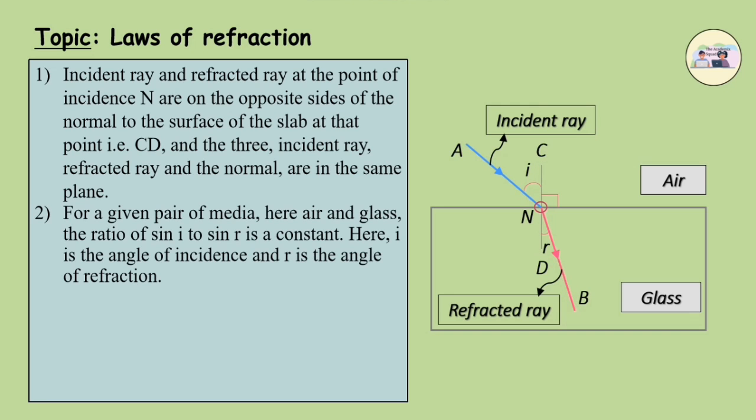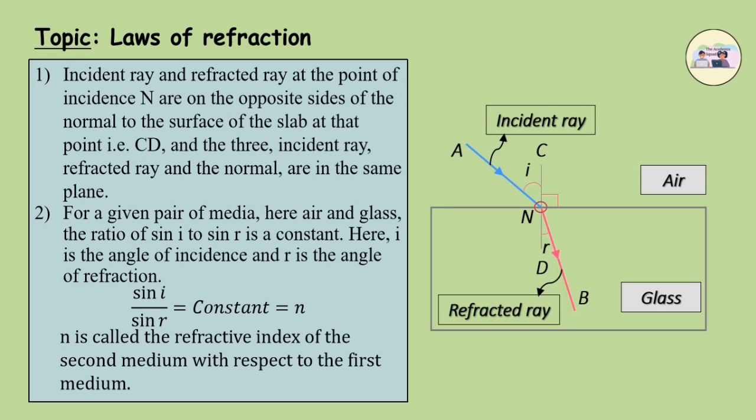Second, for a given pair of media, here air and glass, the ratio of sin I to sin R is a constant. Here, I is the angle of incidence and R is the angle of refraction. sin I upon sin R equals constant equals N. N is called the refractive index of the second medium with respect to the first medium. This second law is also called Snell's law.